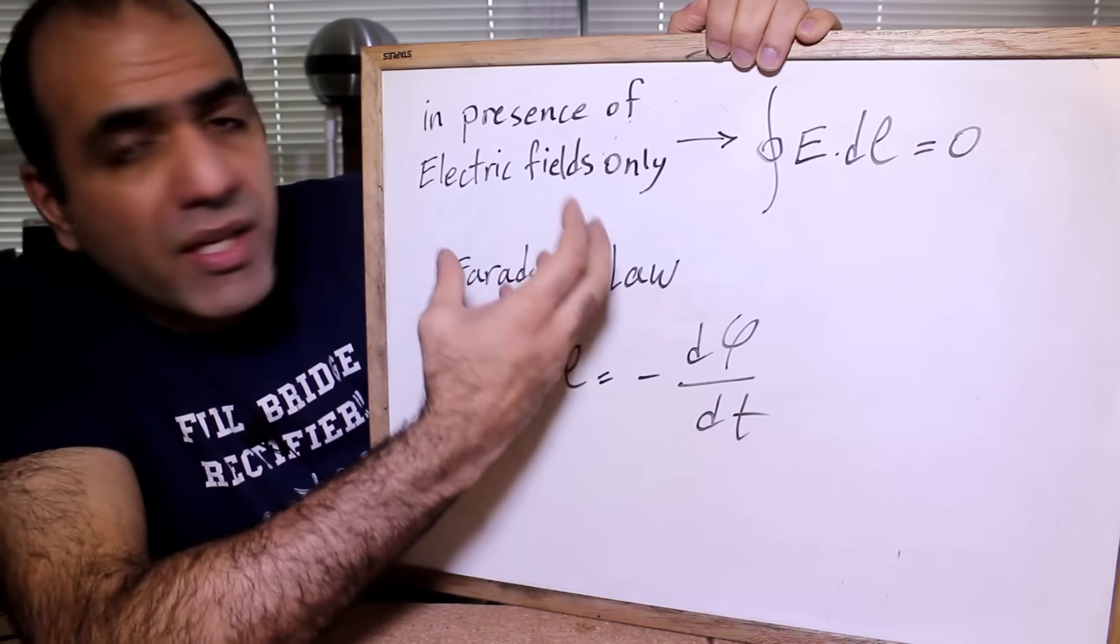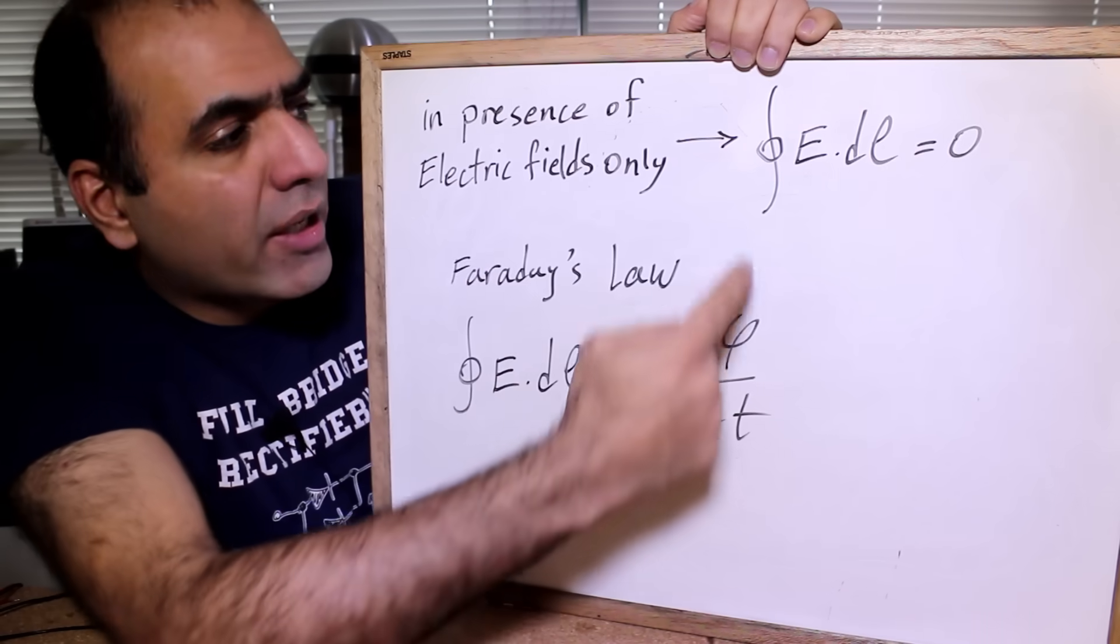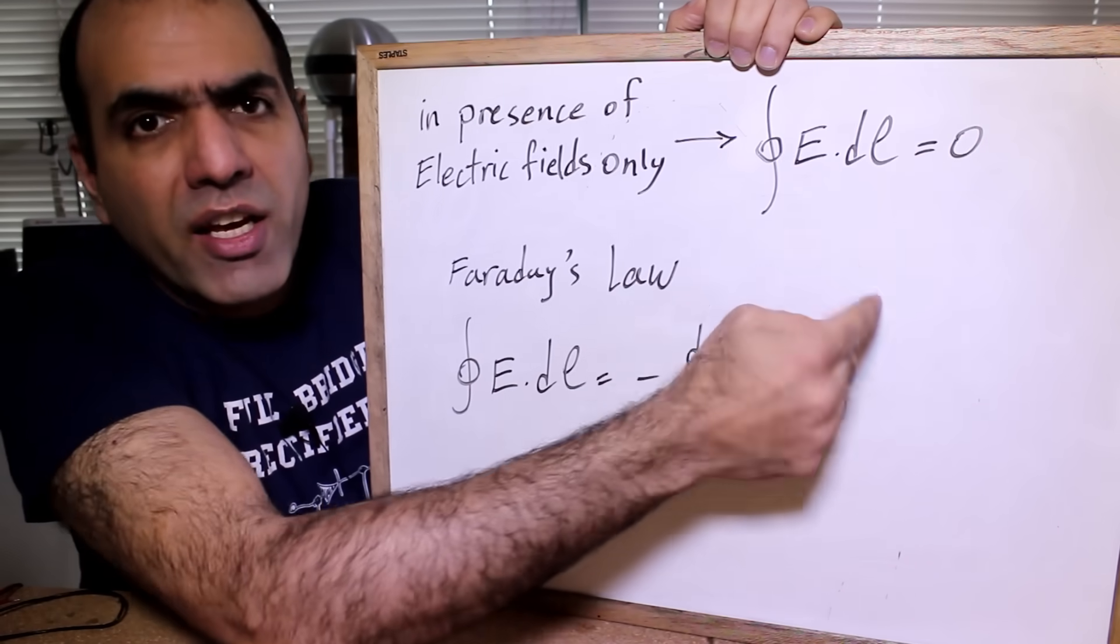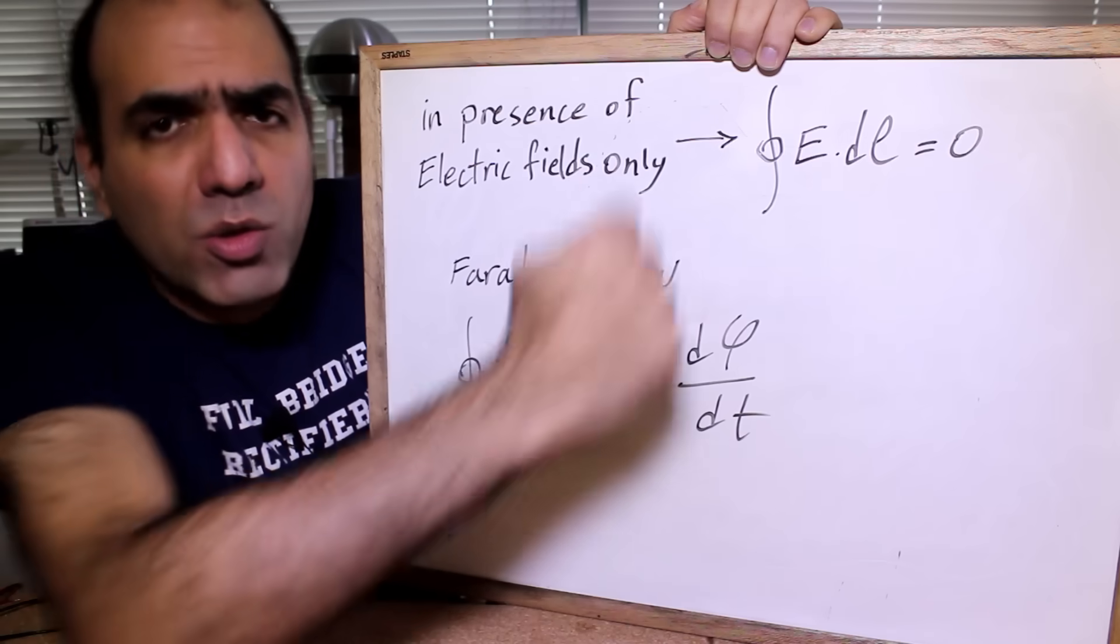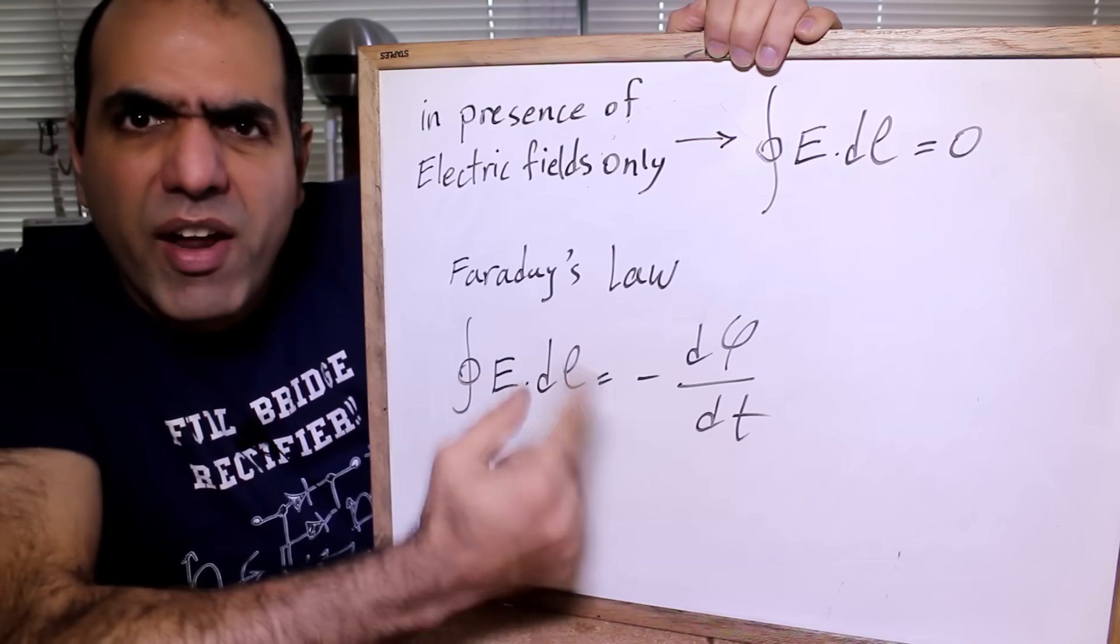Remember, I showed in the presence of electric fields only, the closed loop integral of E dL is zero. But as soon as we have magnetic fields through the loop, this won't be zero anymore and we have to follow Faraday's law.